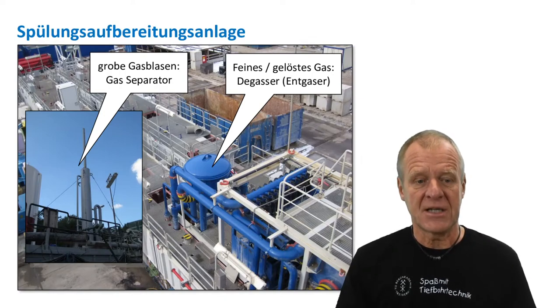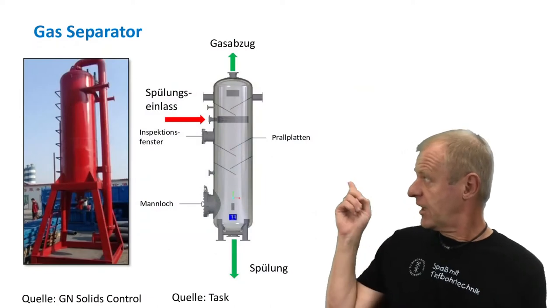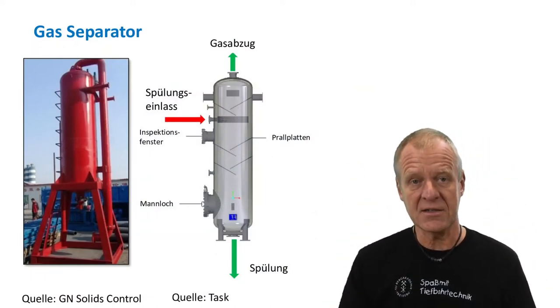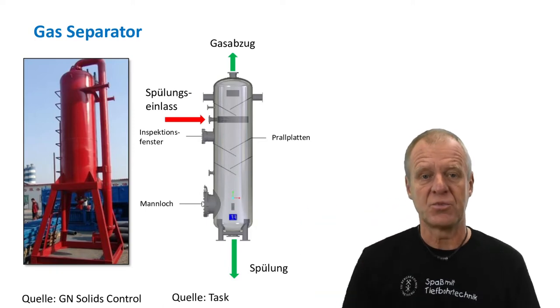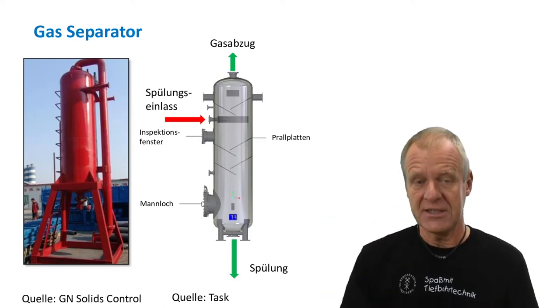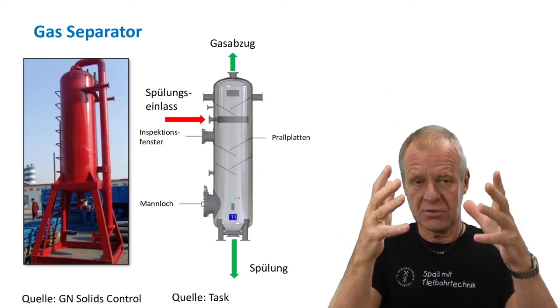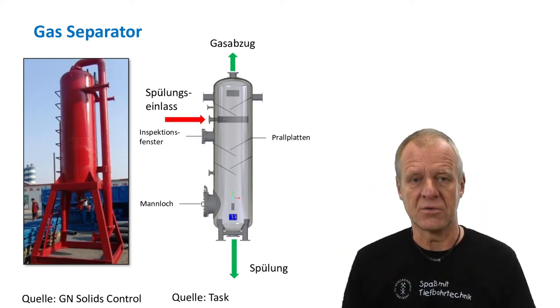Large gas bubbles will easily be removed in the gas separator. A gas separator is basically just a large container or tank where the gaseous mud comes in from one side. The gas is sucked off at the top of the tank while the heavier drilling mud falls down to the bottom.